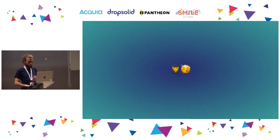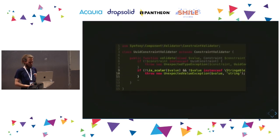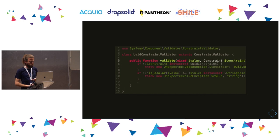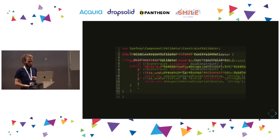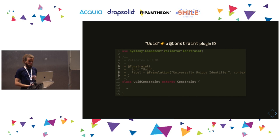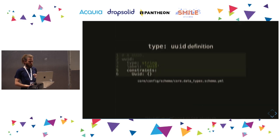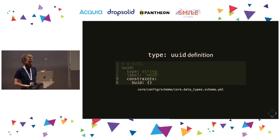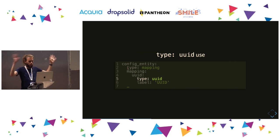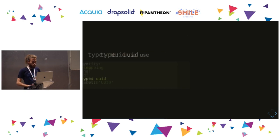That's all the moving pieces — congrats, you know all the concepts important in config schemas and config validation. Quick recap going the other way around: there's a constraint validator connected to a constraint, which has a plugin ID. The plugin ID is mentioned in the constraints key inside a type in a config schema. There is a name for the type — that's the top-level key in a schema.yaml file — and that can be used everywhere in config schemas. Those are the moving parts.